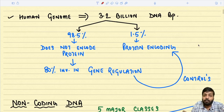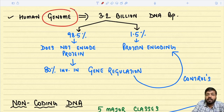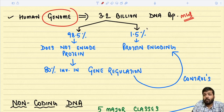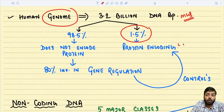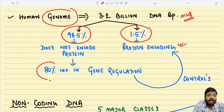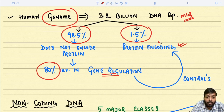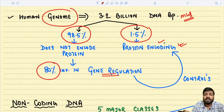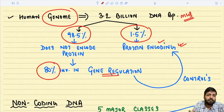The human genome is made up of approximately 3.2 billion DNA base pairs. If we divide the entire genome, approximately 1.5 percent is coding certain proteins — these are the protein-encoding regions. The remaining 98.5 percent do not encode any protein — these are non-protein-encoding regions. Surprisingly, 80 percent of this non-coding region is involved in regulating the protein-encoding region.